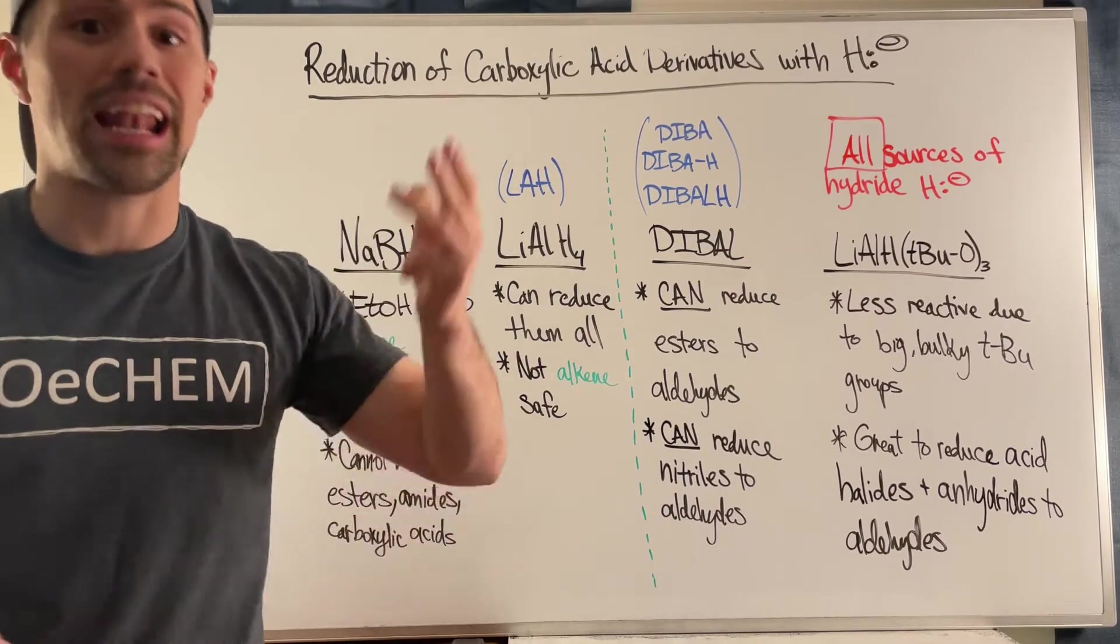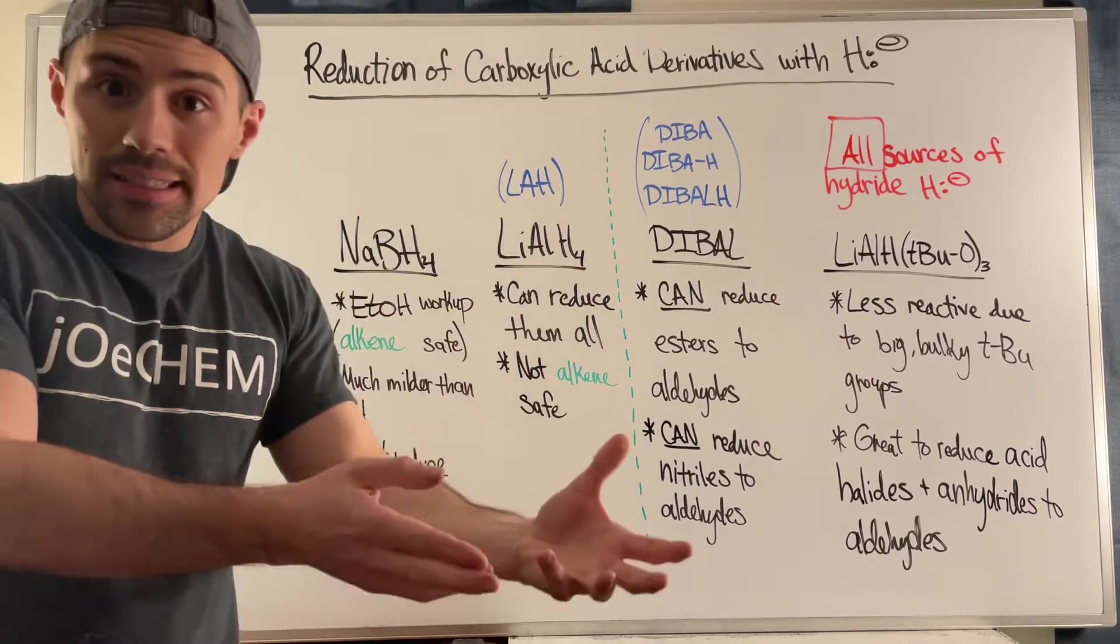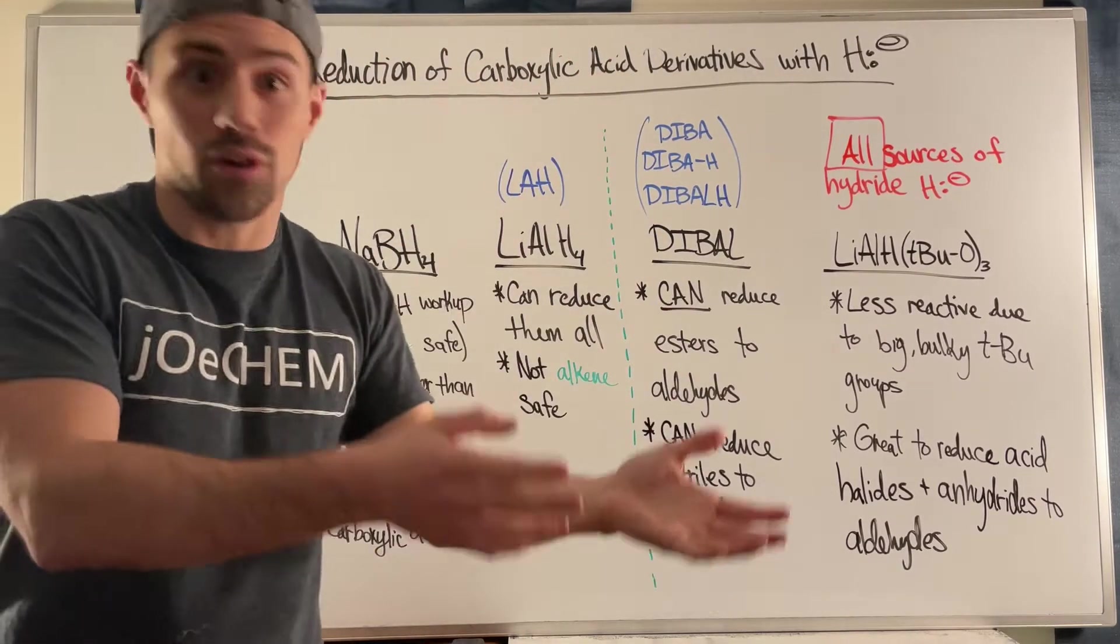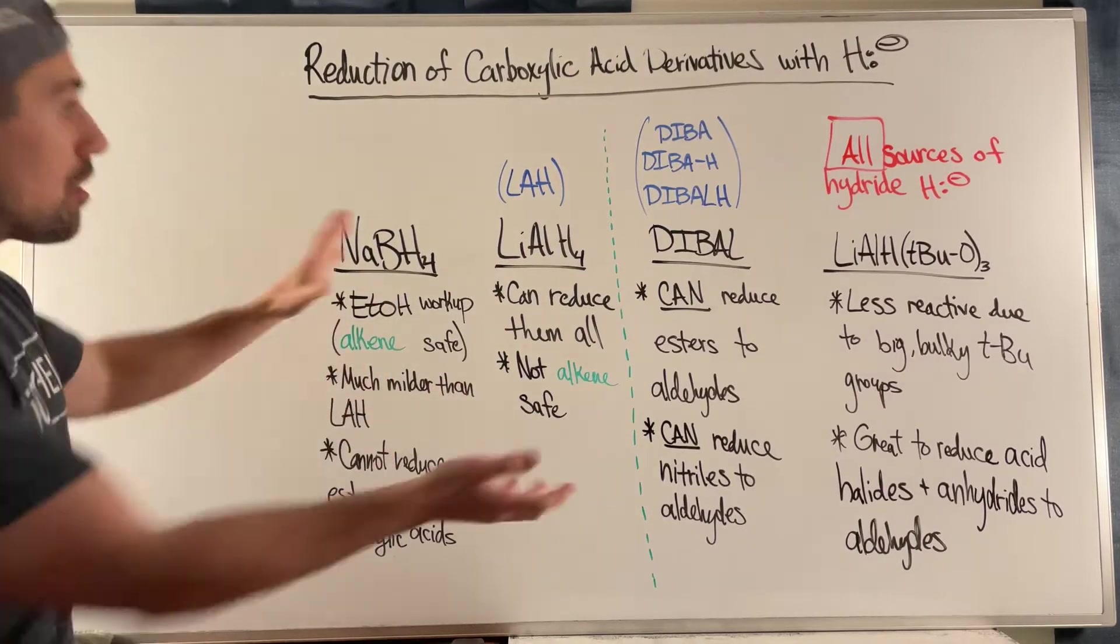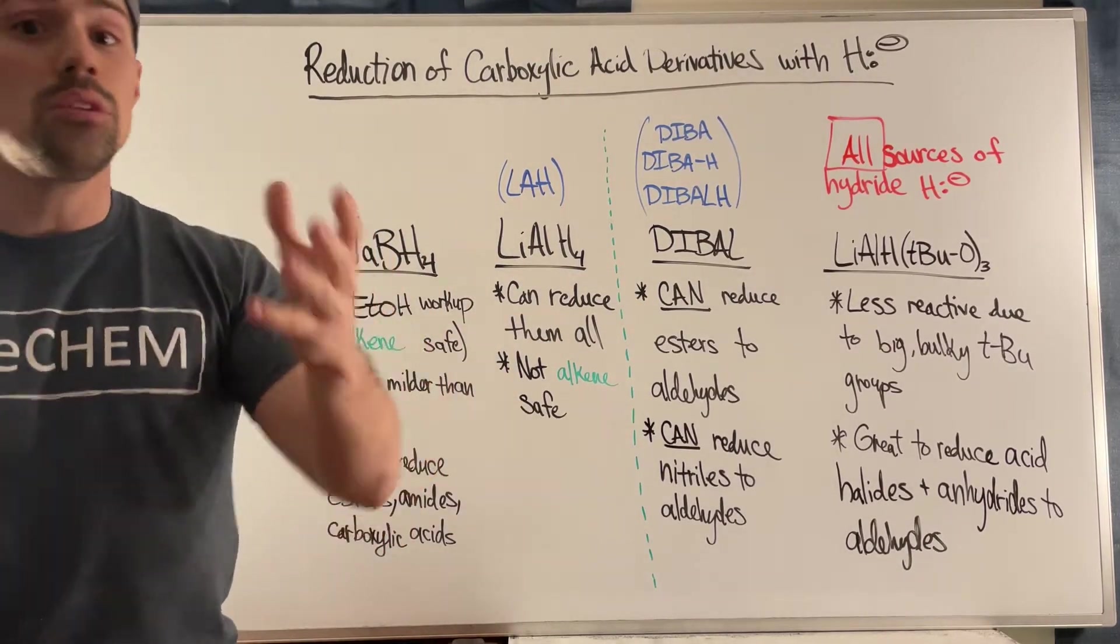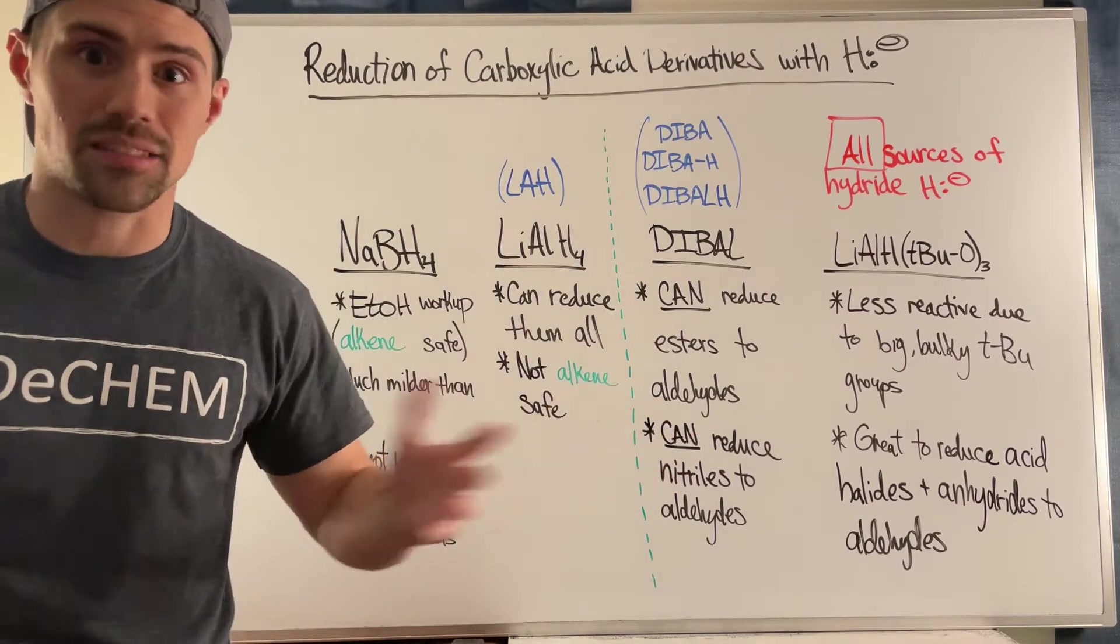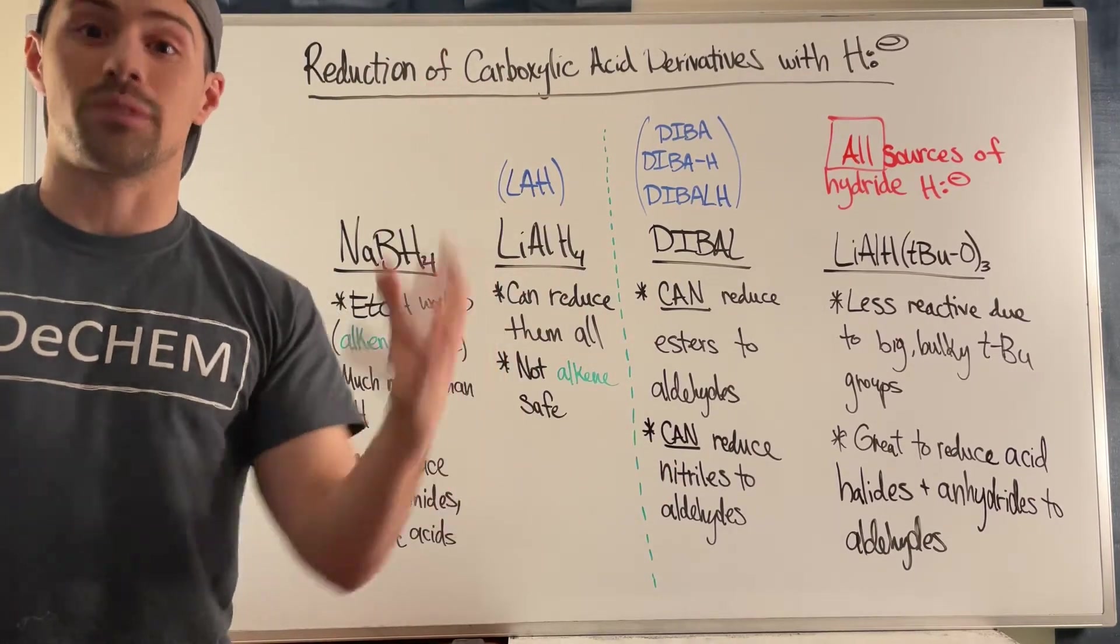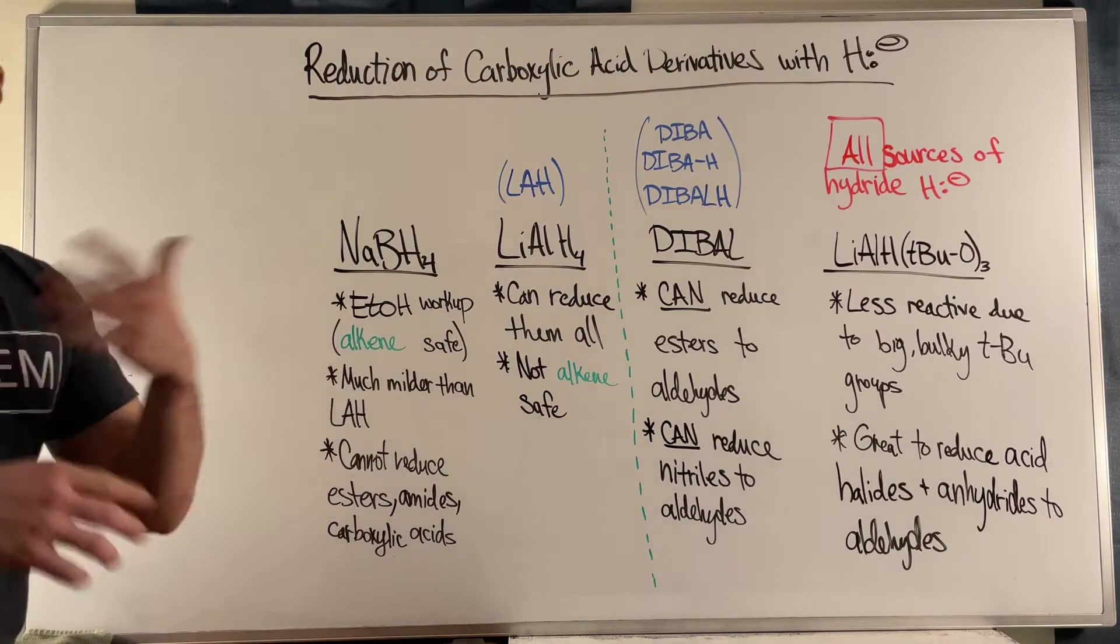Whether your carbonyl is in an amide, an ester, an acid anhydride, an acid halide - what reduces what? In terms of when you have a source of hydride, does it reduce an ester all the way to an alcohol? I want to put it all out there and help you understand who is super reactive, who is not so reactive, in terms of sources of hydride and how they attack carbonyls and carboxylic acid derivatives.